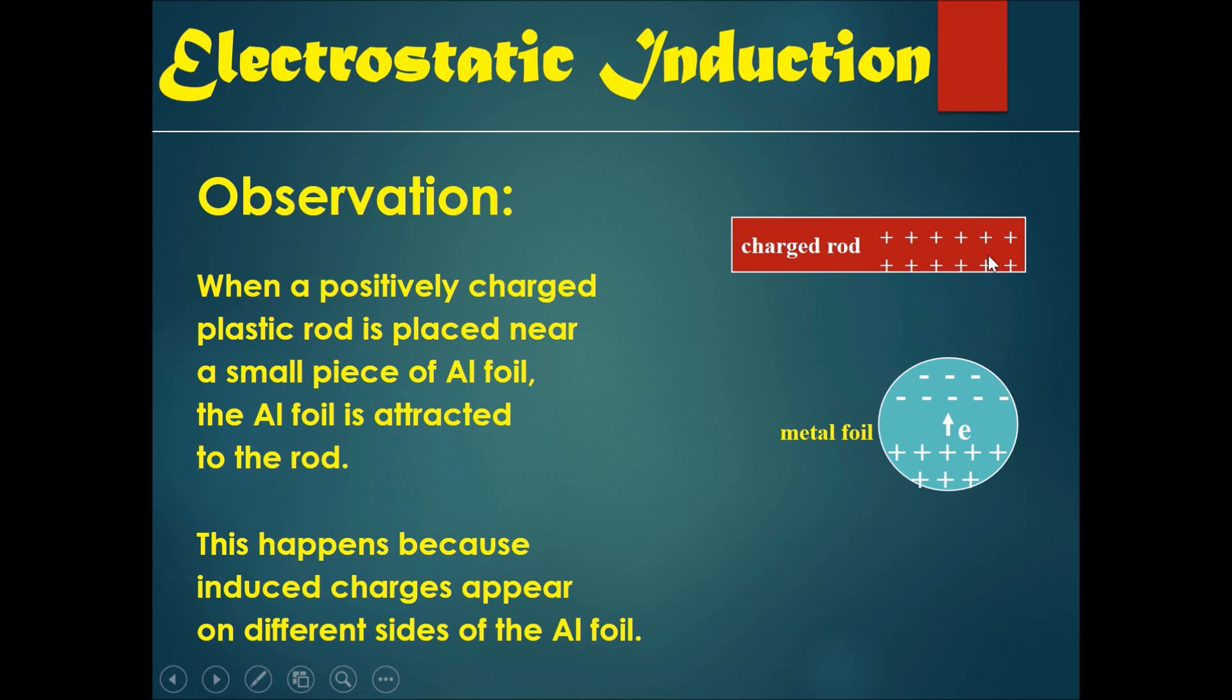When a positively charged plastic rod is placed near a small piece of aluminum foil, the aluminum foil is attracted to the rod. This happens because induced charges appear on different sides of the aluminum foil.